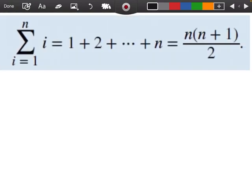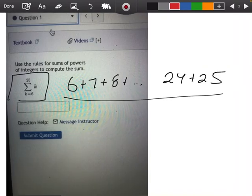So we have a formula for the sum of integers. The only thing is that when we start, this formula starts when we're starting off at 1, going to a particular value, right? And here, we're not starting at 1, we're starting at 6.